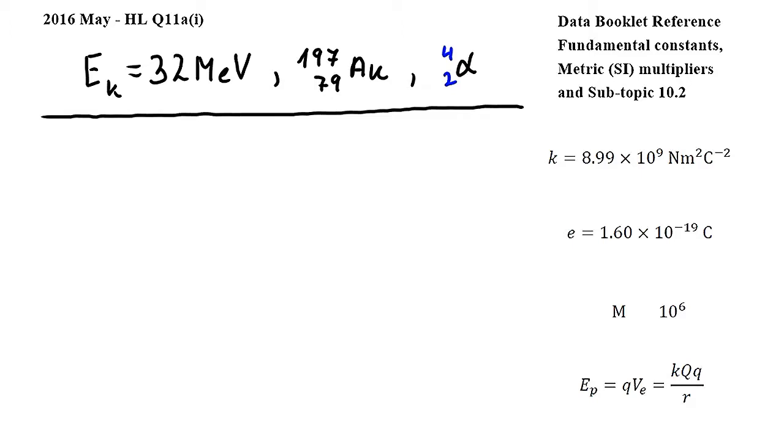Let's start by converting the kinetic energy, eK, of the alpha particle into joules. The kinetic energy is 32 mega electron volts, which I will convert into electron volts using this conversion from the metric multiplier section of the data booklet, so we get 32 times 10 to the power of 6 electron volts.